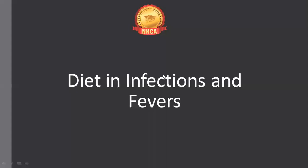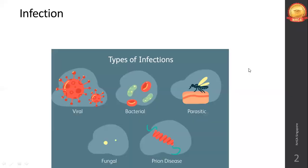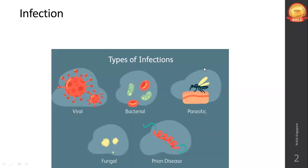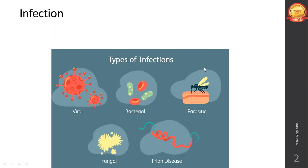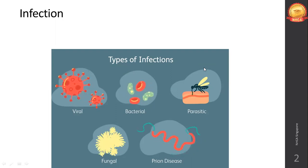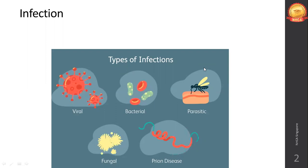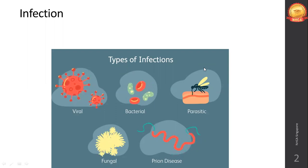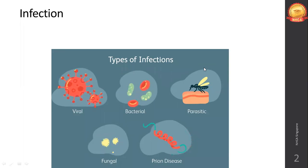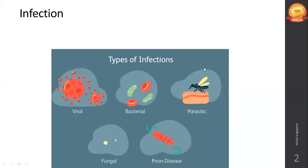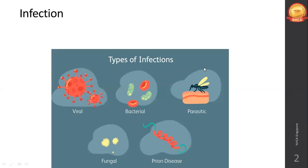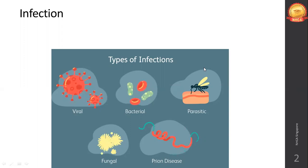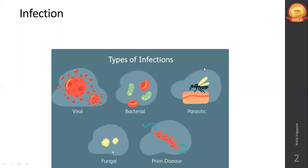Today we are covering chapter 40 on dieting infections and fever, page number 276. There are different types of infections: viral, bacterial, parasitic, fungal, prion disease, etc. Any infection which occurs in the body will cause a rise in temperature, general malaise, fatigue, weakness, and loss of certain senses like taste and smell. Infections are transmitted from person to person through various modes.